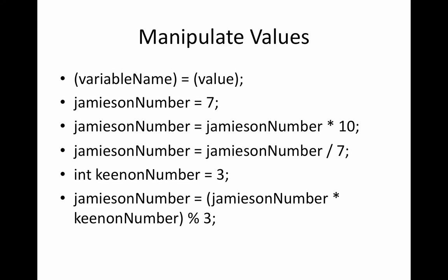So to manipulate values, you just say the name of the variable and the value that you want to put into it. So you can say Jameson number equals seven, and the computer will go to its infinite chest of drawers, find the drawer with Jameson number written on it, and go and put a 7 in it.